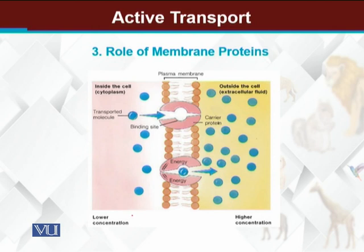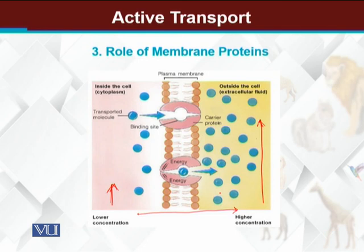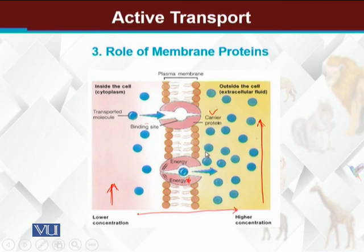The movement is from an area where the concentration is low to where the concentration is high. When movement occurs from low to high concentration, we say it is against the concentration gradient. Against the concentration gradient, molecules will never move on their own from low to high. Specific carrier proteins carry them from low concentration toward high concentration, utilizing energy (ATP) for this movement. The special characteristic of active transport is that energy is utilized in this transport.